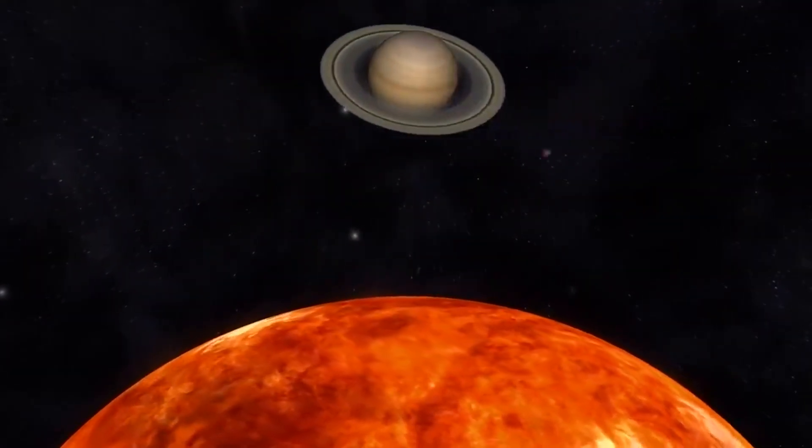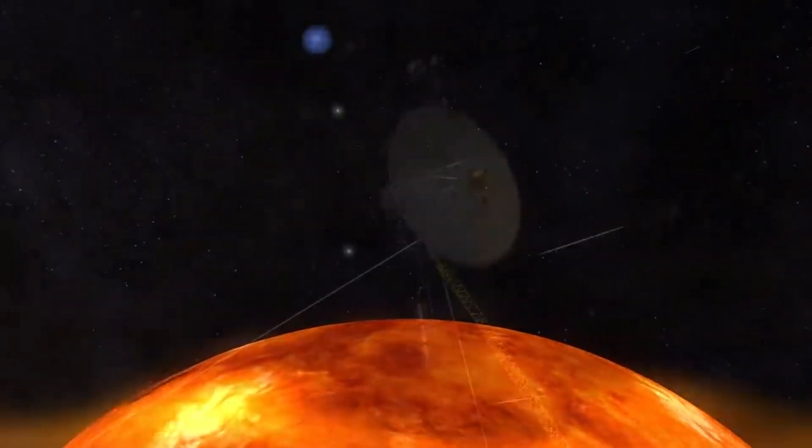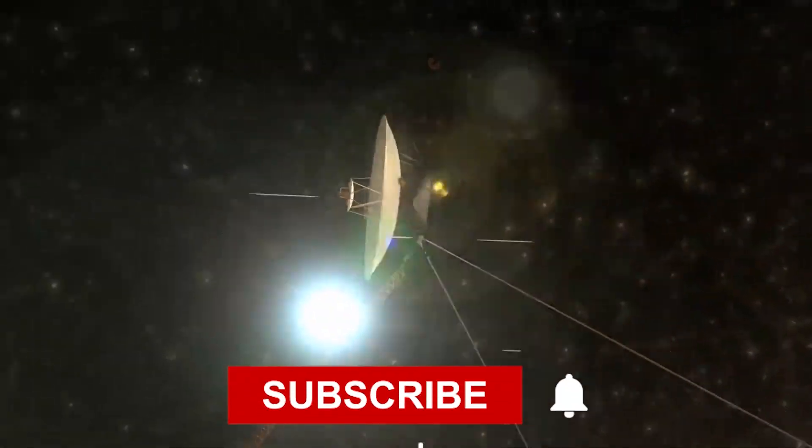In 1986, Voyager 2 became the first spacecraft to fly past Uranus. Three years later, it passed Neptune. So far, it is only the spacecraft to have made such journeys.